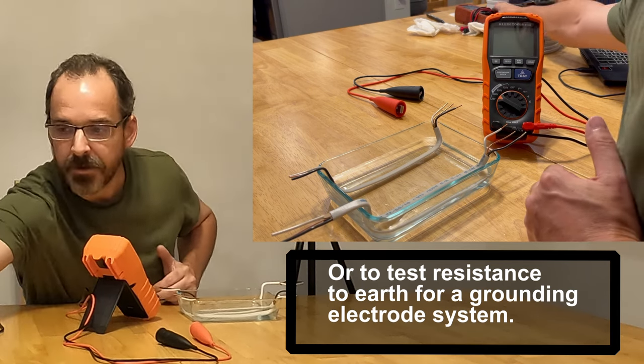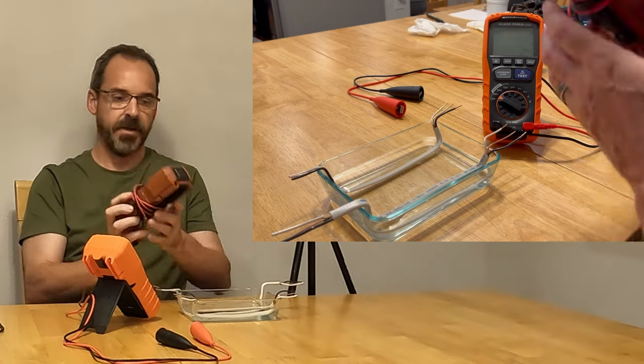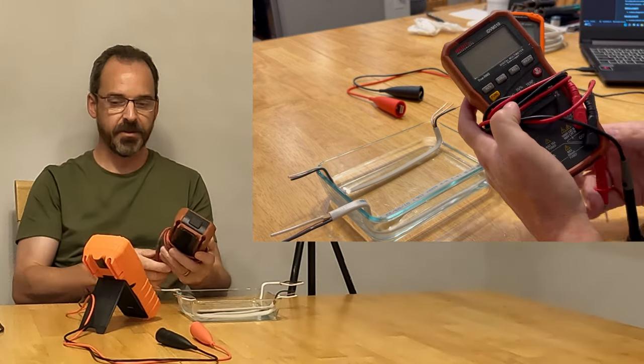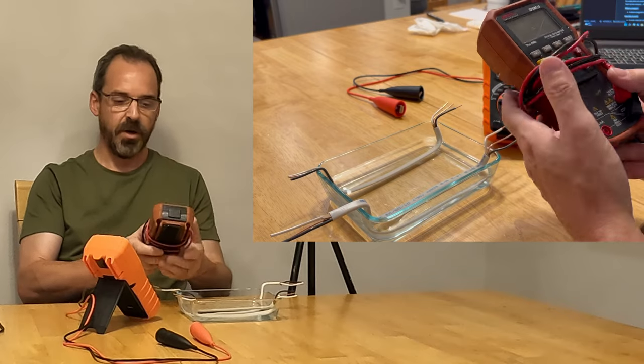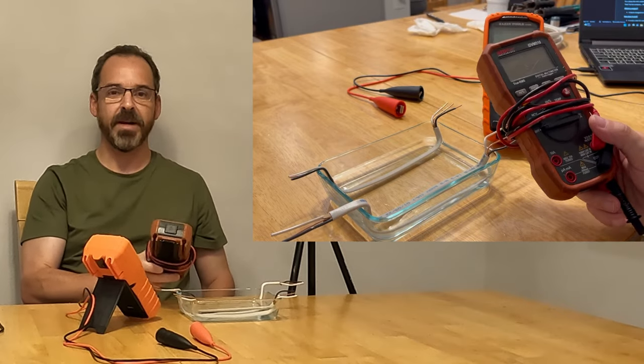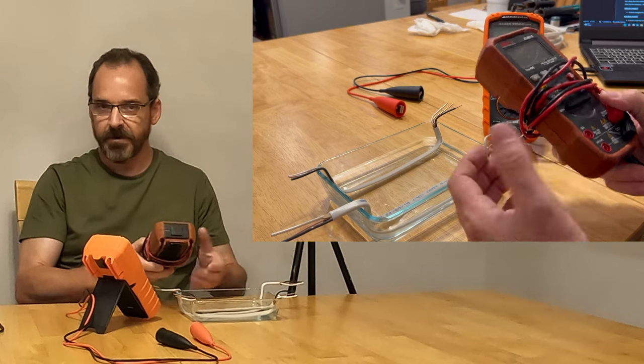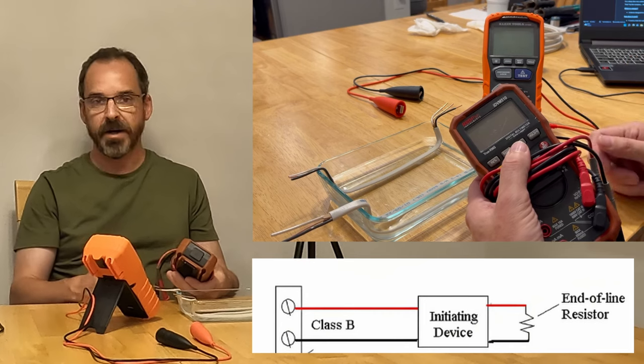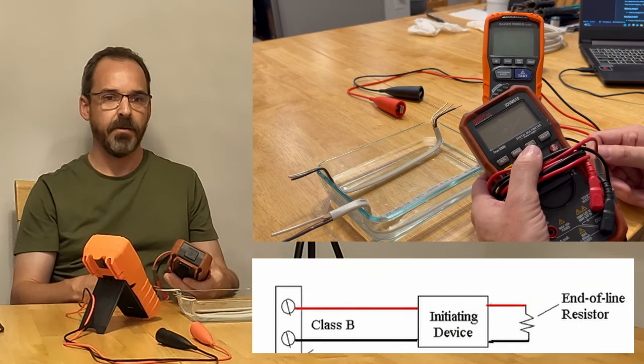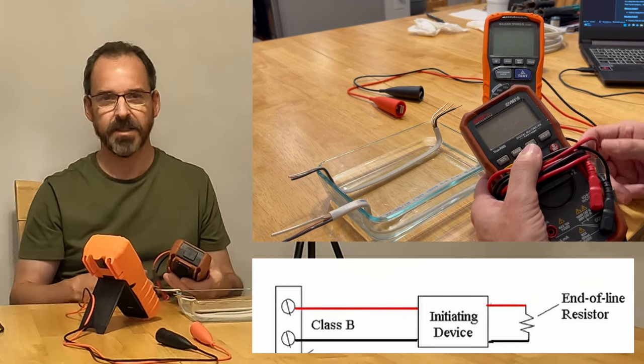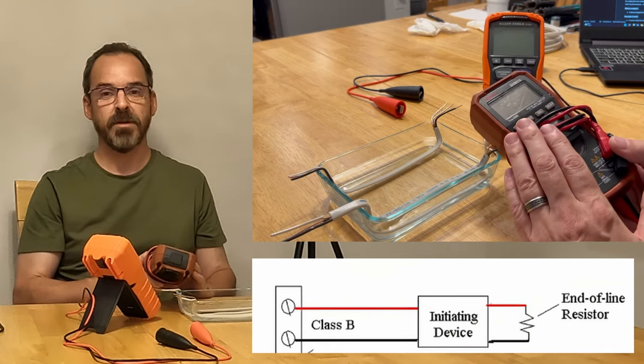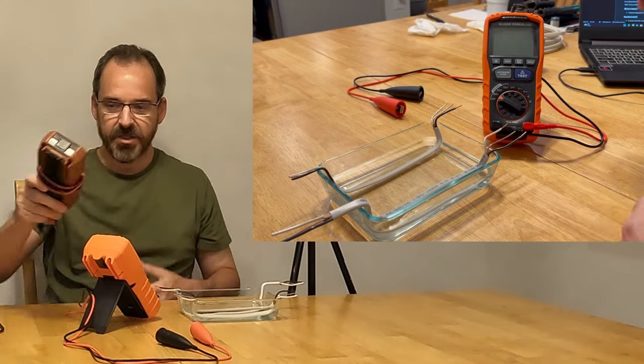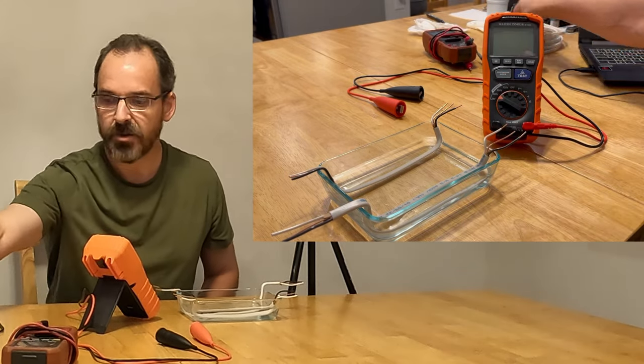Whereas a standard meter, such as my meter here, this meter can test standard resistance values up to a point. I don't know the exact value, but it's not very high. For basic testing, if you want to test like a resistor for an end-of-line circuit on a fire alarm circuit, for instance, I think those are typically 6K, or some systems are 6K, this tester would be able to test that.